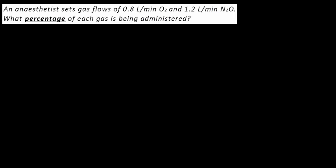We're going to do two questions regarding a mixture of gas. In this case we've got two gases: oxygen and nitrous oxide, and we need to find the percentage of each gas in turn. Bear in mind that the percentages must add up to 100 percent, so we can use that as a check.